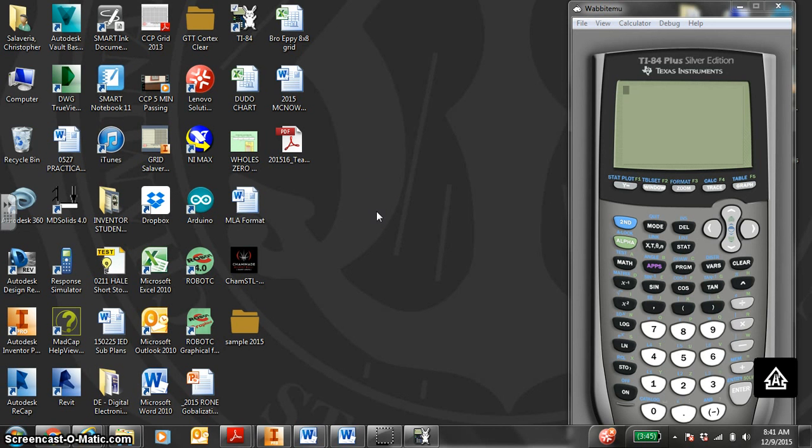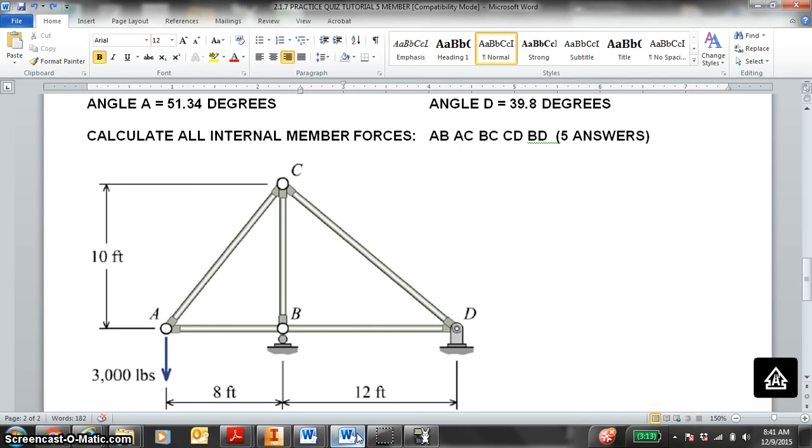Principles of Engineering, Unit 2.1.7, Truss Theory Quiz Review. First thing you should have is a red utensil and a calculator. To make sure your calculator is in degrees mode, hit the mode button. Make sure you're in degrees. And then to quickly check, you do sine of 30 degrees, and that is 0.5. So you know you're in degrees mode.